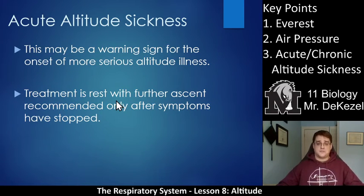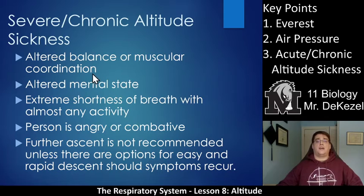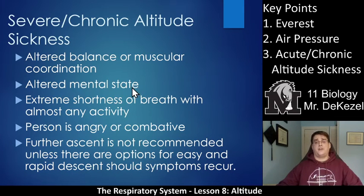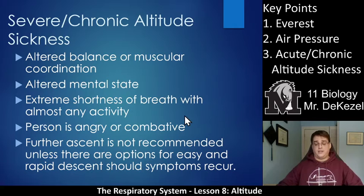The treatment for acute sickness is to rest and only go up farther once your symptoms have stopped — often you need to go back down to stop the symptoms from occurring, not just stop going up. Severe or chronic altitude sickness can involve altered balance or muscular coordination, inability to walk, and altered mental states. It's very common for people with altitude sickness to be laughing uncontrollably and then just stop. You can have extreme shortness of breath simply from walking or getting up, and sometimes people can be angry or combative — a sign that the altitude sickness is having a real effect on the brain and is getting dangerous.